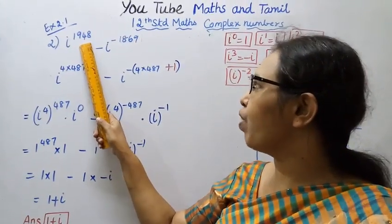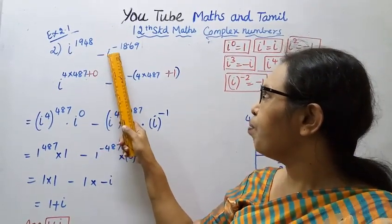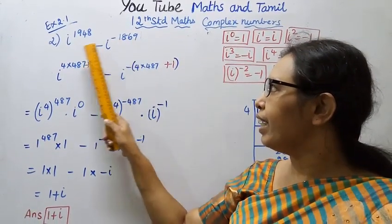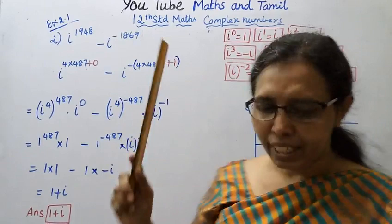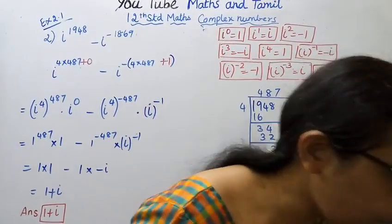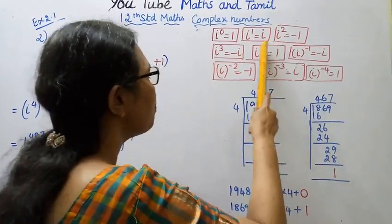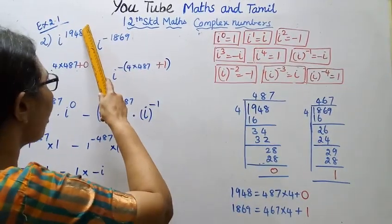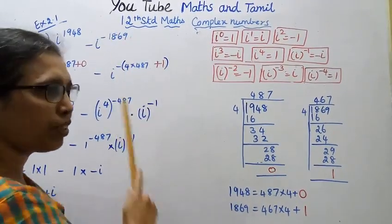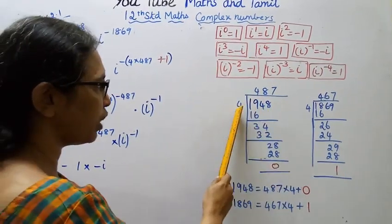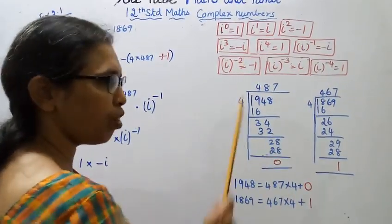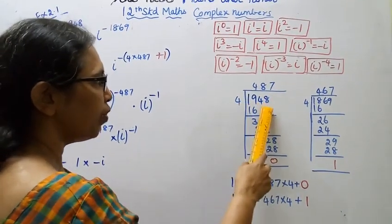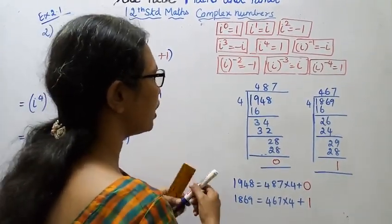The first sum is: i power 1948 minus i power minus 1869. Now, the key rule here is i^4 = 1. So we divide the exponent by 4. For 1948, divide by 4; similarly for 1869, divide by 4 and find the quotient and remainder.